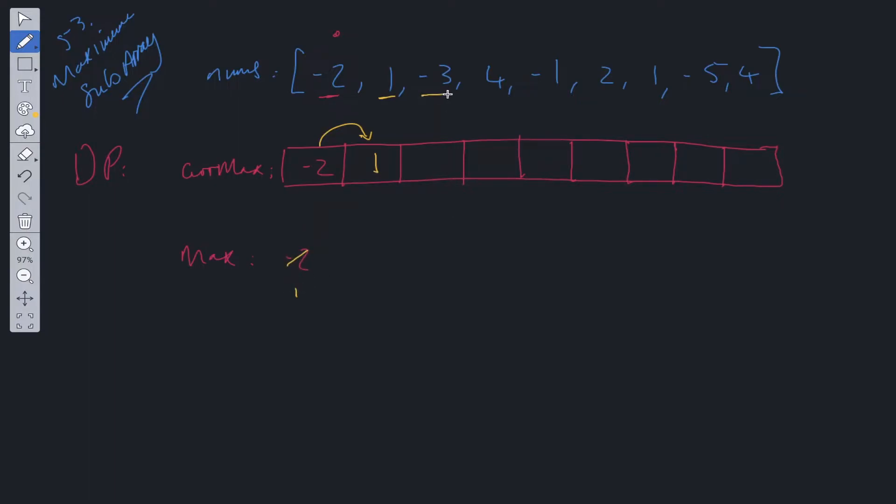Then we move along. We have minus 3 here. So we can use minus 3 as the maximum, or we can use 1 plus minus 3 as the maximum. So we'll use 1 plus minus 3, which is minus 2. And as you can see, a trend is growing here. We look at the maximum here. The maximum between 1 and minus 2 is 1, so we leave that the same. But there is a trend.